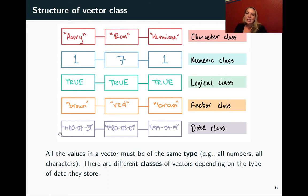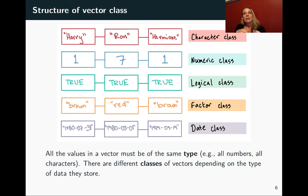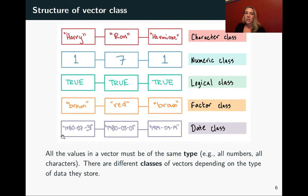The last one I've put in here is the date class. Again, it's in quotation marks with numbers, so it looks a bit like a character class. But once you have something in a date class, it has more embedded in it — numerical information underneath that counts the number of days since a certain origin date. When you ask it to print out, it prints in a nice readable format, but it has what R needs to do things like calculate the number of days between two dates or pull out the weekday for a specific date.